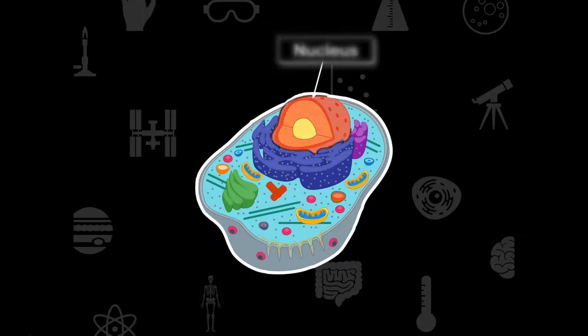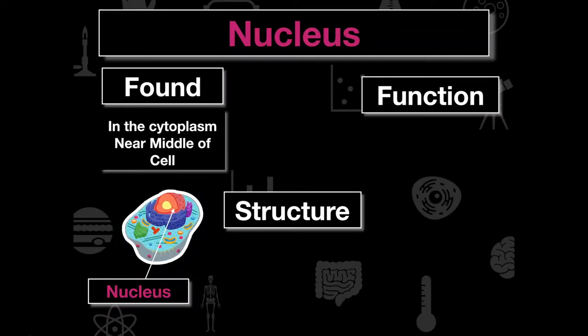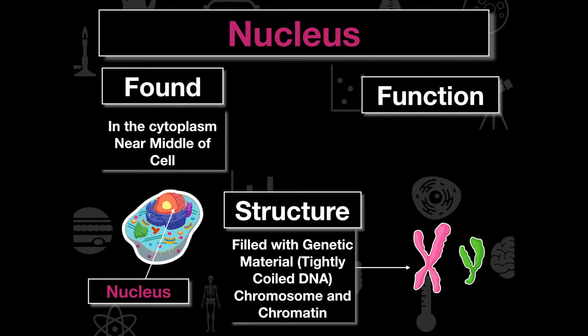We're going to start off with the nucleus — its purpose, function, and structure. The nucleus is found in the center of the cell and is the most obvious thing we see when looking at a cell under the microscope. Its structure is a membrane system that contains the genetic material. The DNA exists either in chromosome format during mitosis or meiosis, or most of the time as chromatin wound around histones.